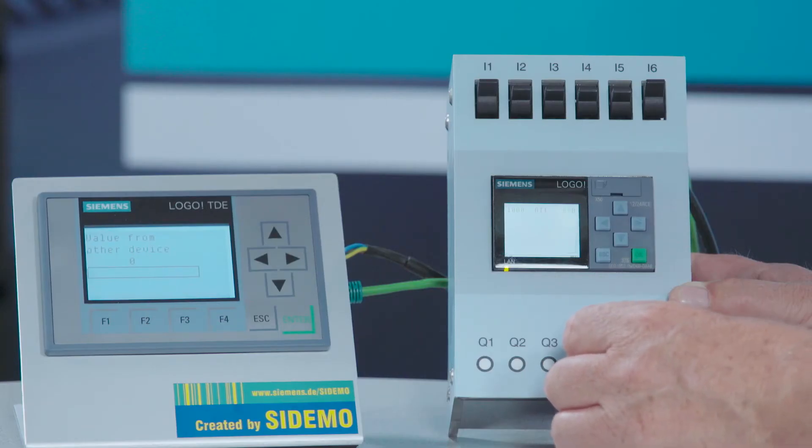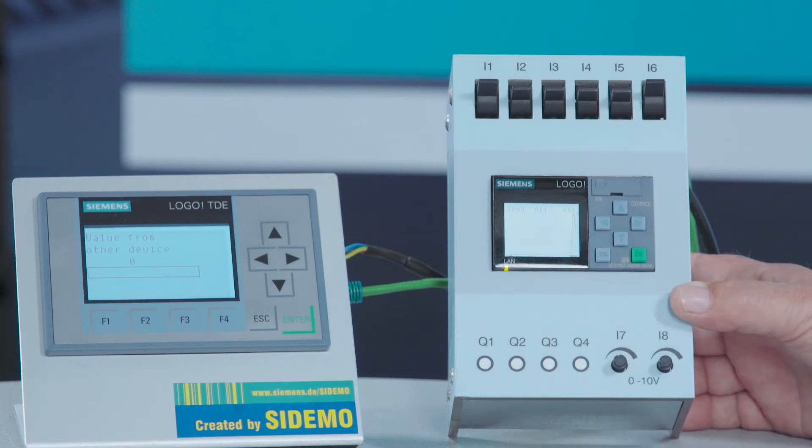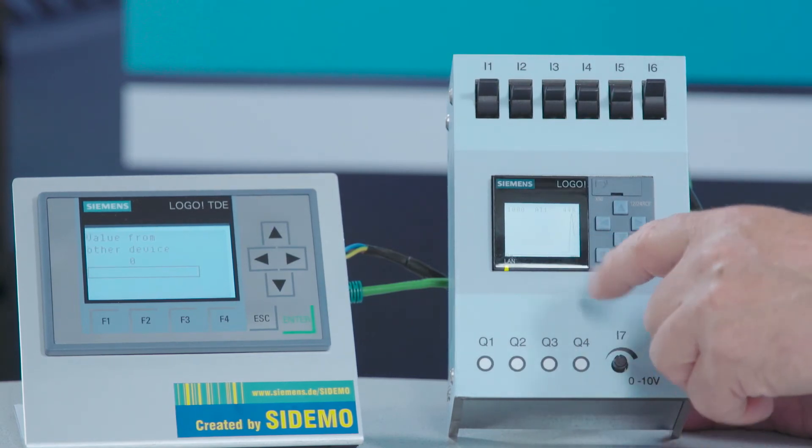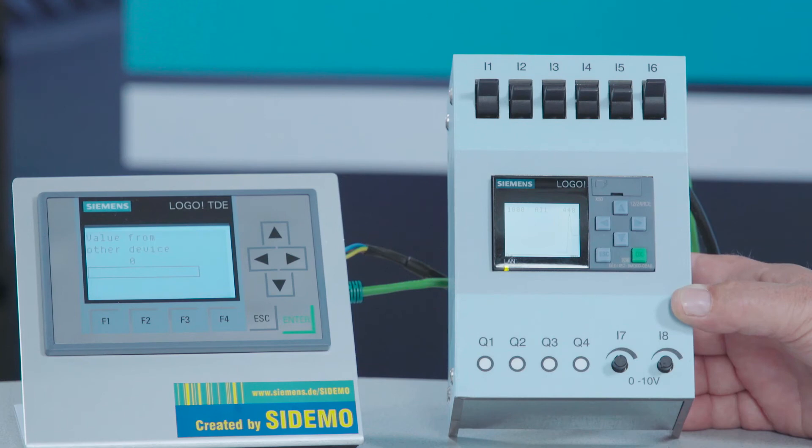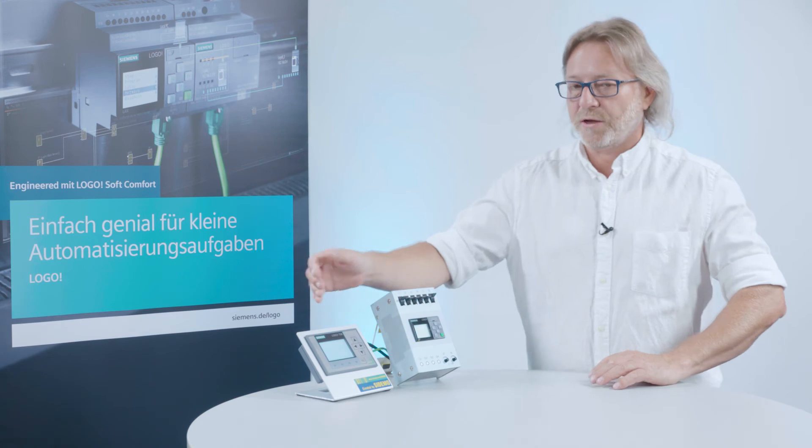If I modify it, we can see that in the graph. The value is shown as a trend view and up here on the right as a value in figures. That works on the basic unit as well as on the TDE.